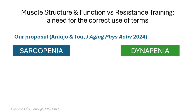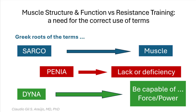Have you ever heard of dynapenia? What is the difference between sarcopenia and dynapenia? Thinking in the Greek roots, sarco means muscle and penia means lack or deficiency, while dynapenia refers to capable force or power.